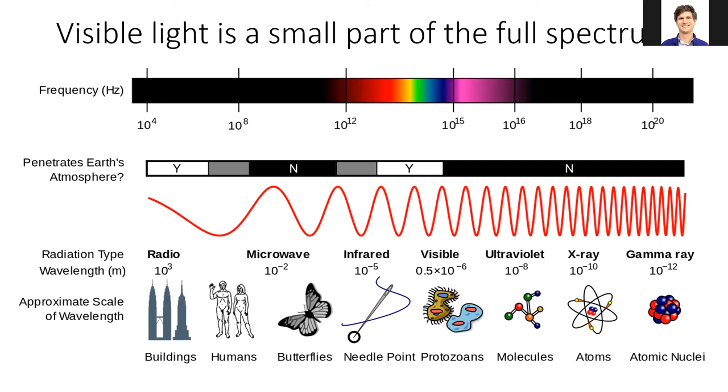Infrared waves are emitted from hot objects, and often their wavelengths are measured in micrometers. Visible light has wavelengths in the hundreds of nanometers.